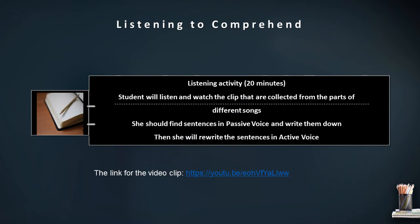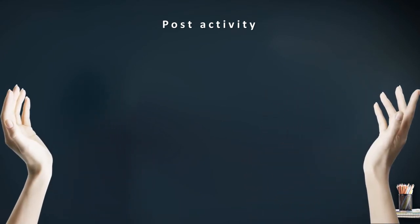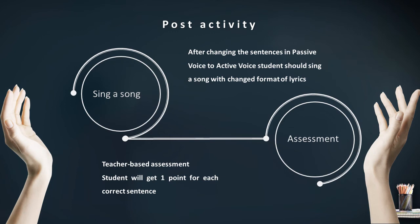Now let's speak about the listening activity. The listening activity is planned for 20 minutes and includes two stages of Rod Ellis's five-step approach: listening to comprehend and listening to notice. In the first stage, students will listen and watch clips collected from parts of different songs, available via the provided link. In the next stage, students should find sentences in the passive voice and write them down. Afterwards, they will rewrite those sentences, converting them from passive voice into active voice. The student is then engaged in a post-activity of singing a song with the changed lyrics, which will be very effective and interesting as the songs are familiar to most people.